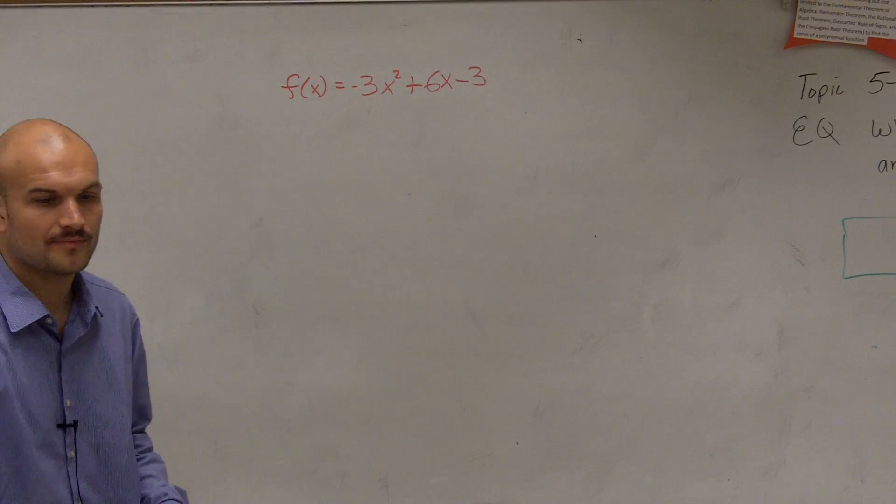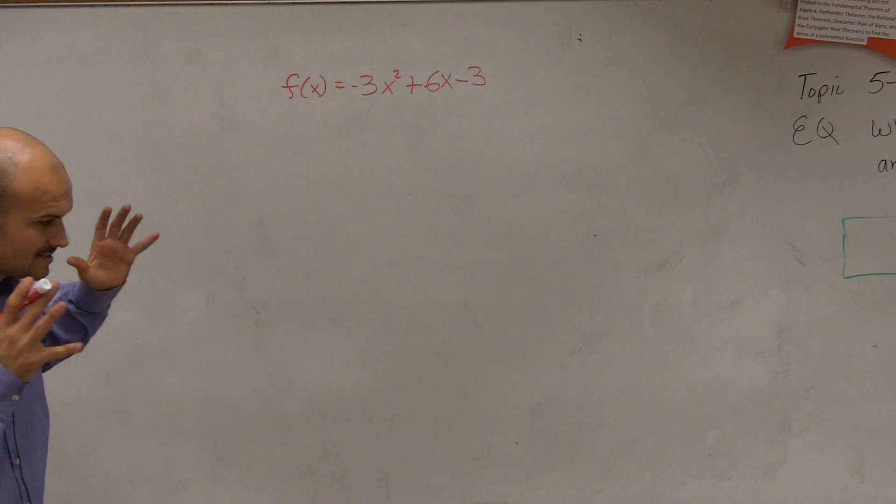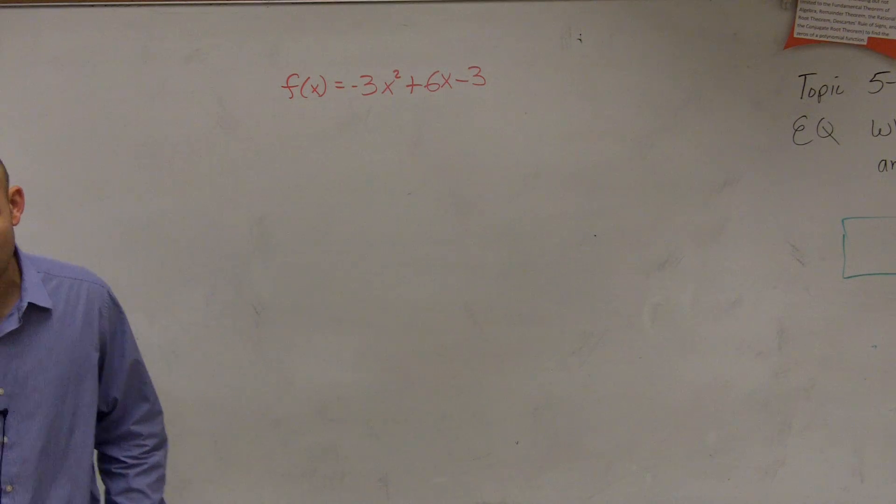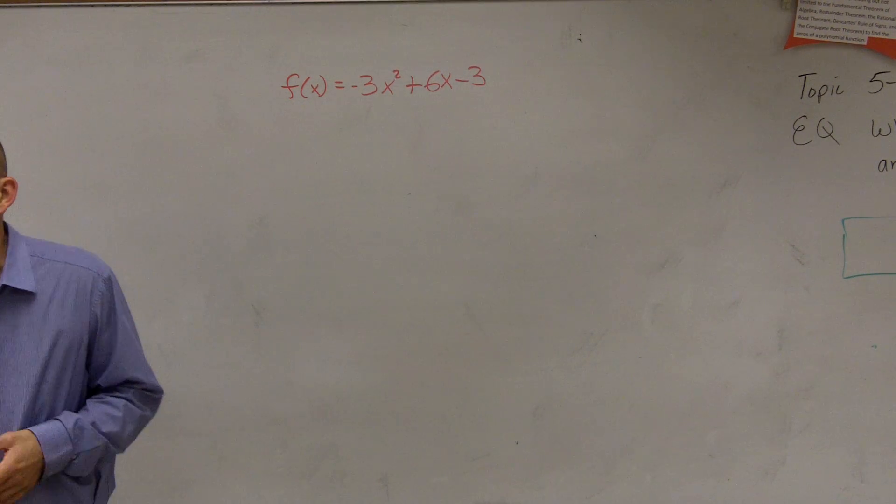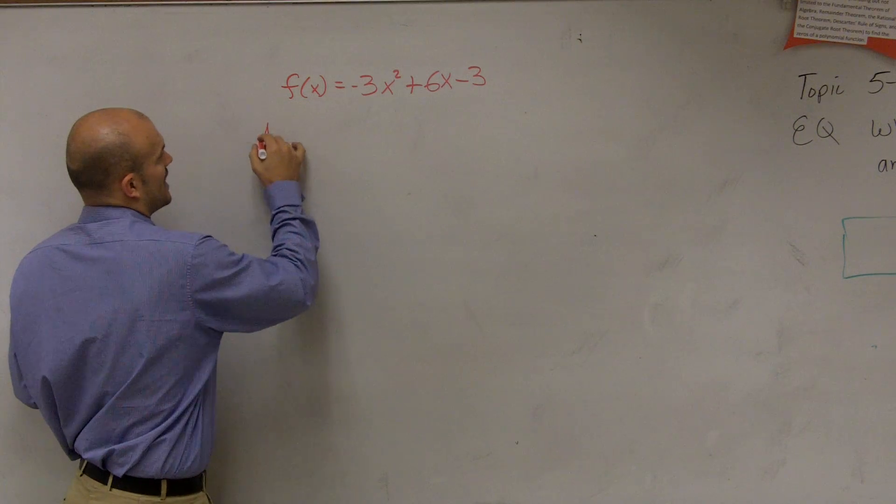The first thing that we're going to do to this problem, I always like to find the axis of symmetry first. Even though the first problem says to find the vertex, I believe it's always easy to find the axis of symmetry first. Do you remember the definition of the axis of symmetry?